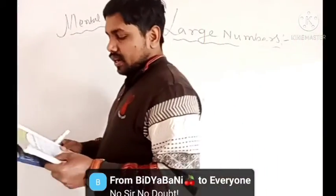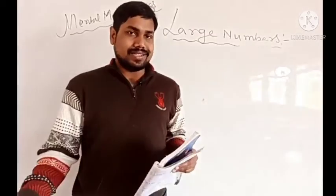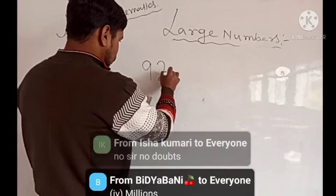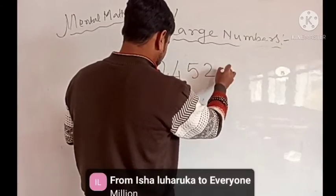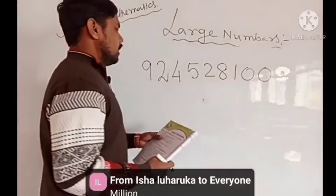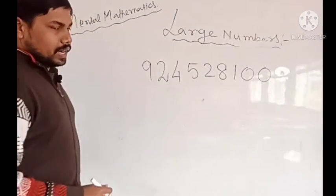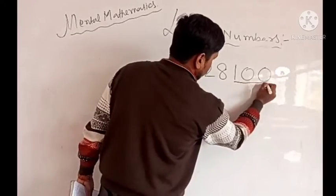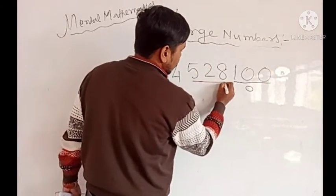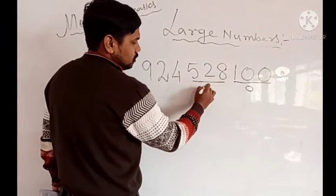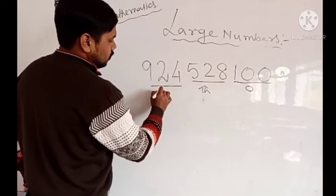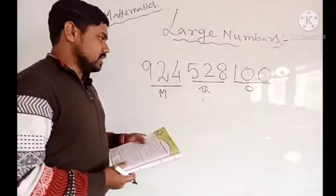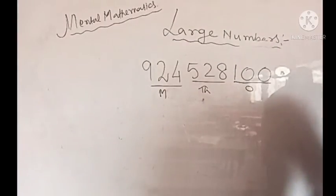The period of 9 in this number, in the international system — the number is 9, 2, 4, 5, 2, 8, 1, 0, 0. These last three are in the ones period, the next three are in the thousands period, and the first three are in the millions period. So 9 is in the millions period. Similarly, 2 and 4 also come in the millions period.